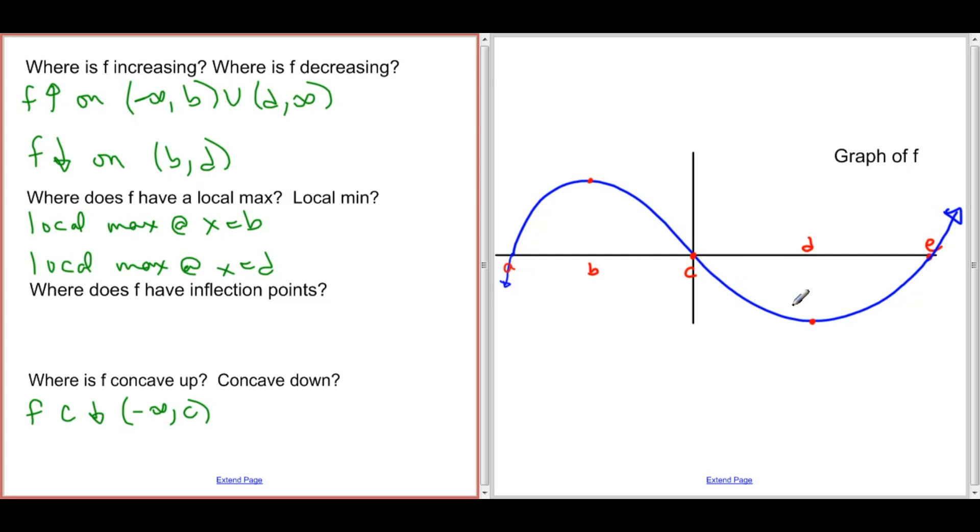And then from c to infinity, f is concave up. So f is concave up on the interval from c to infinity. Now, the point at which f changes concavity is x equals c.